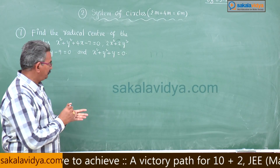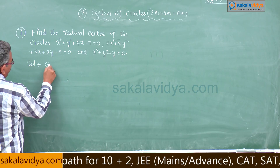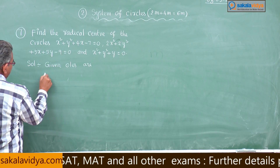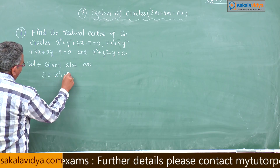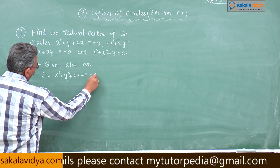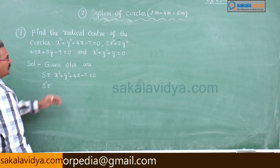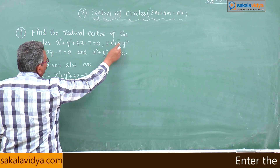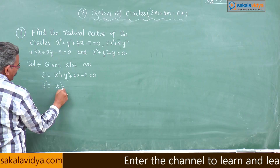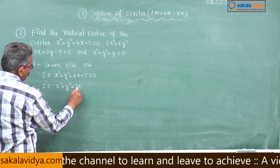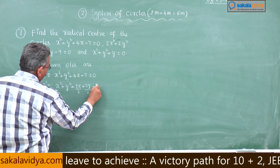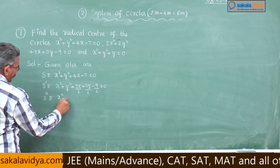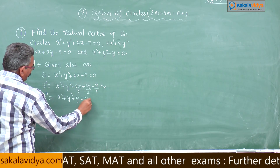Let us do this problem. The given circles are: S = x² + y² + 4x − 7 = 0. The second circle is not in the general form, so we have to put it in general form — we need to make the x² and y² coefficients unity, so divide by 2. We get S' = x² + y² + (3x/2) + (5y/2) − (9/2) = 0. The third one need not change: S'' = x² + y² + y = 0.